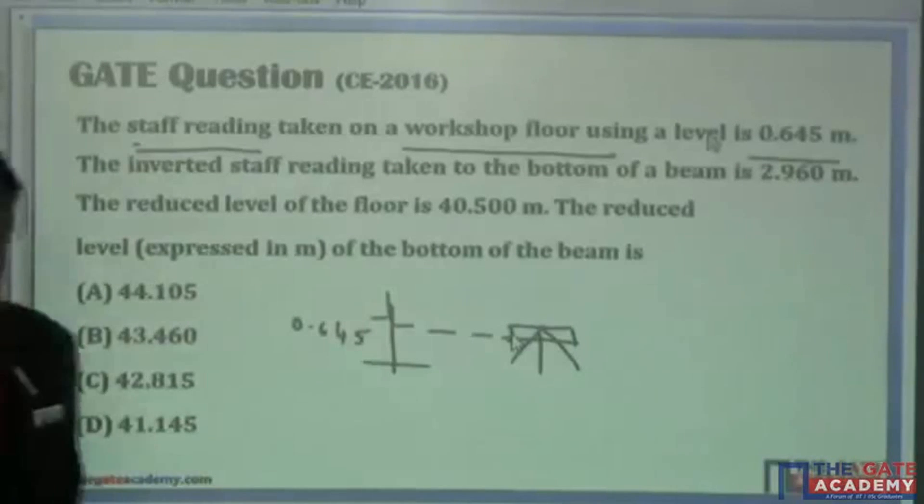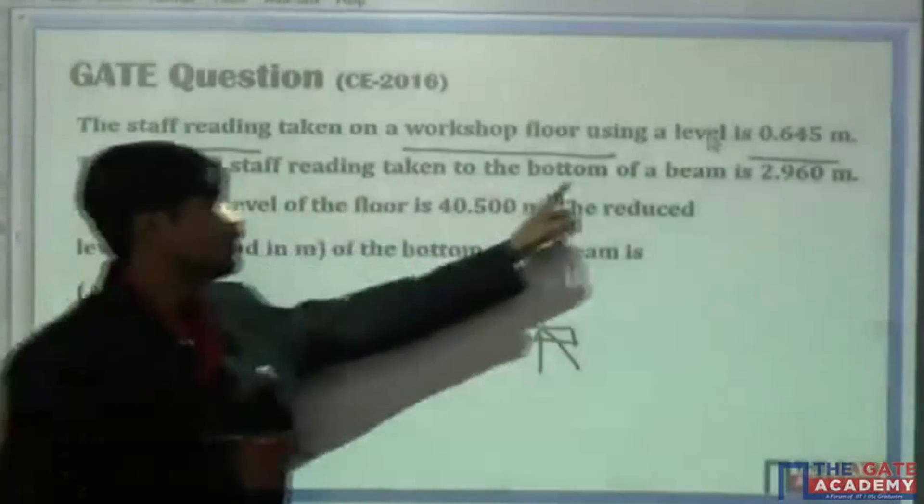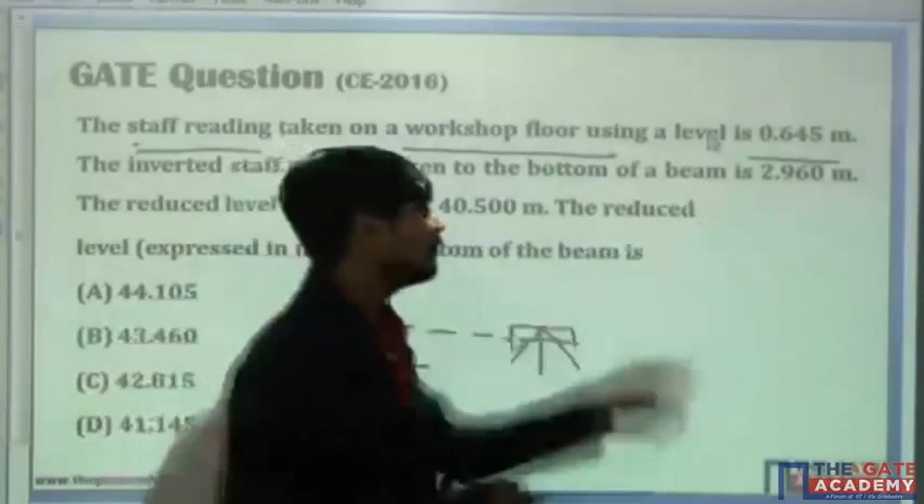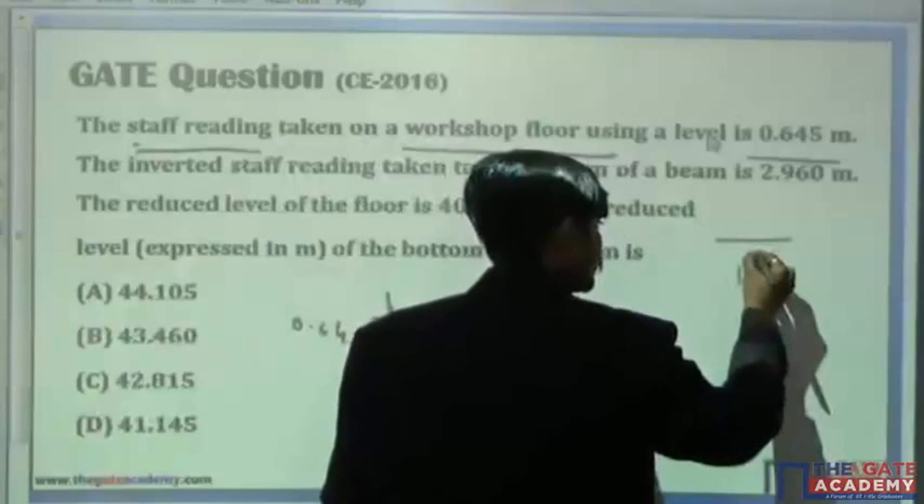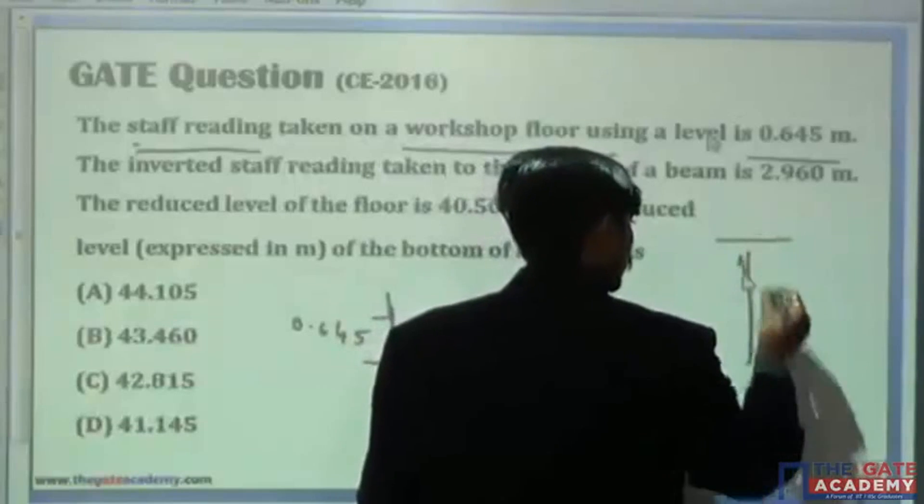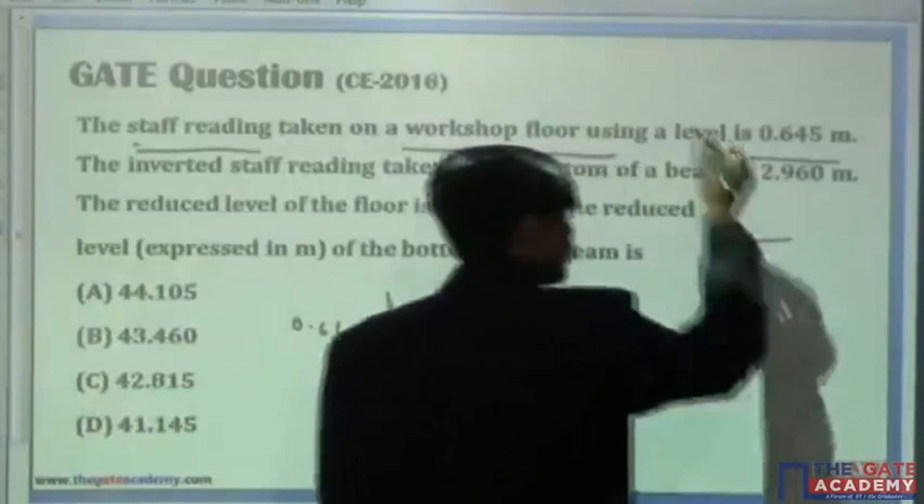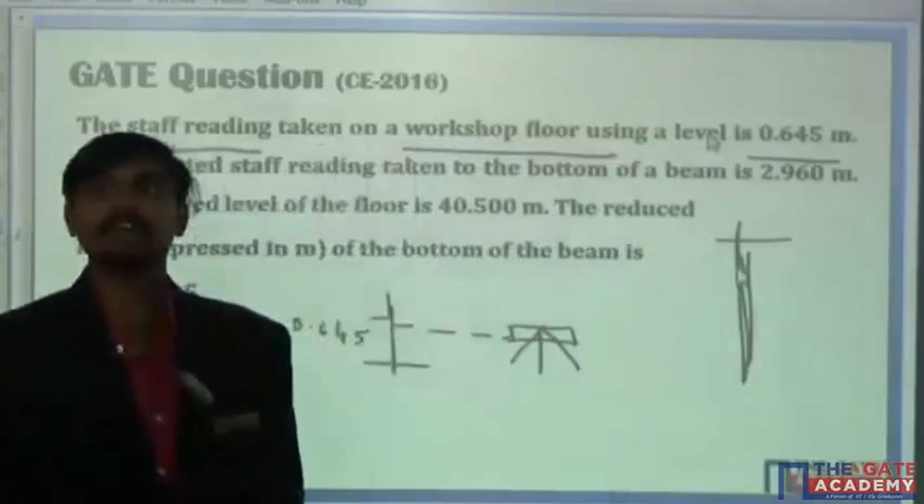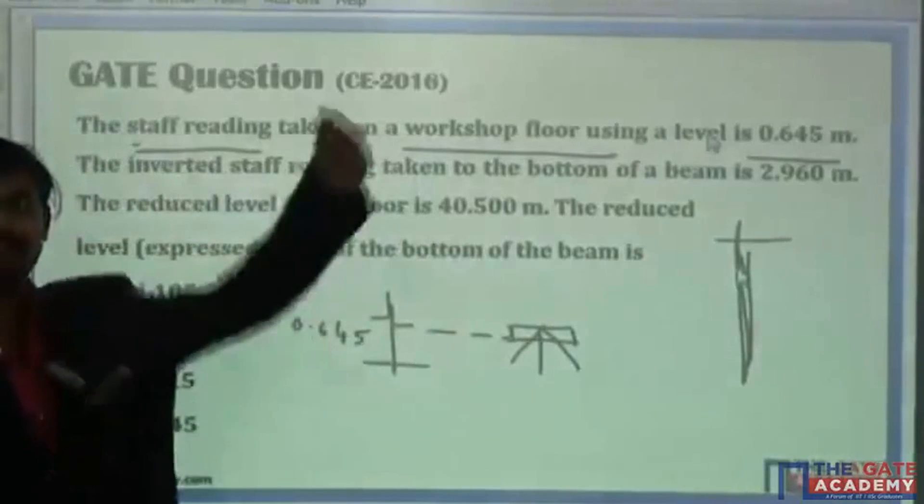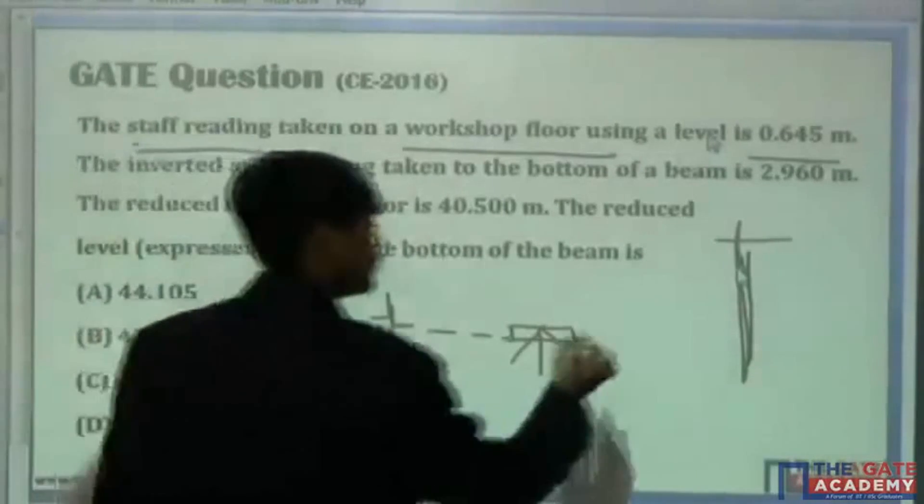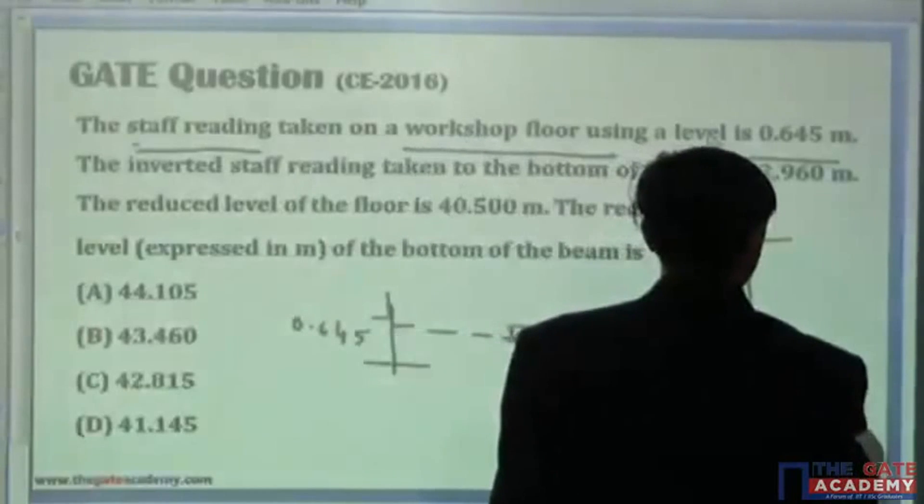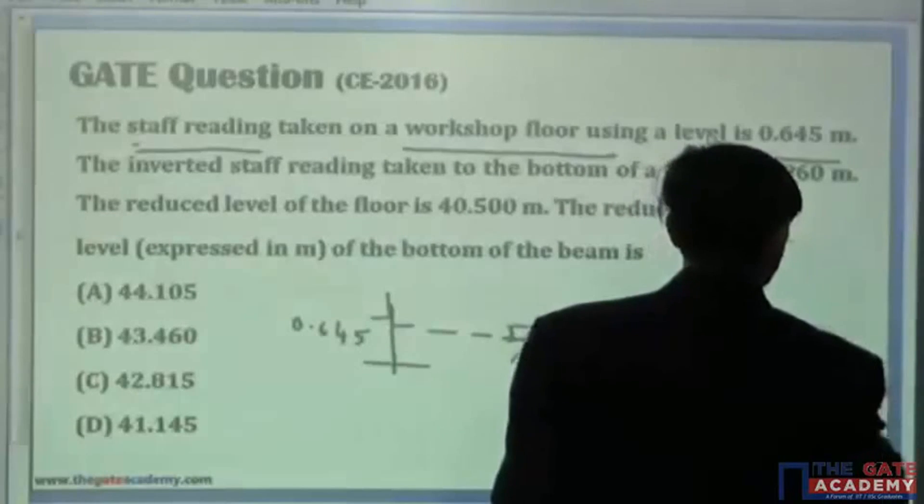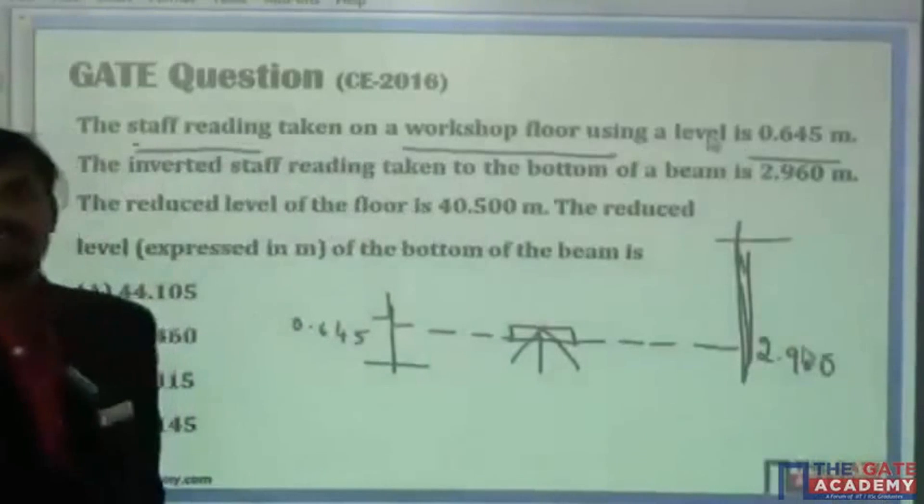Now, the inverted staff reading, inverted staff reading taken to the bottom of the beam. There is somewhere beam here. Somewhere here only. There is one more staff which is kept here. Now, remember that whatever the staff which is kept here, he has said that staff is inverted. Inverted means reverse. The reading is 2.960.